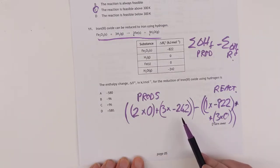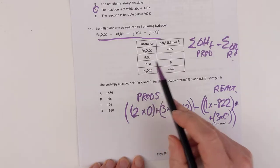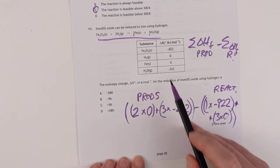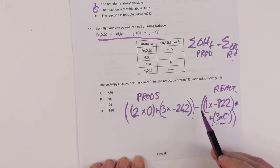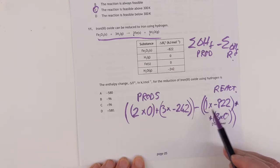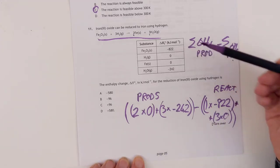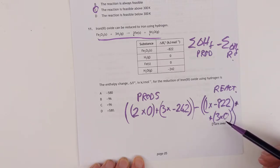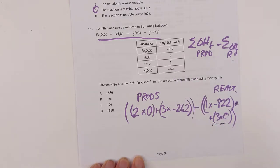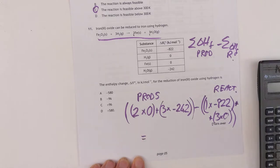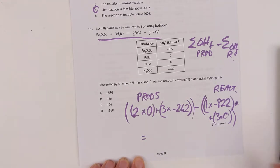So here's our products: we've got two lots of hydrogen, which is zero; we've got three lots of water, which is three lots of negative 242. Take away the sum of one lot of Fe₂O₃, which is minus 822, and three lots of hydrogen, which is zero. So let's do the calculation on that. And according to my calculator, the answer is positive 96, so that would give us C for that one.